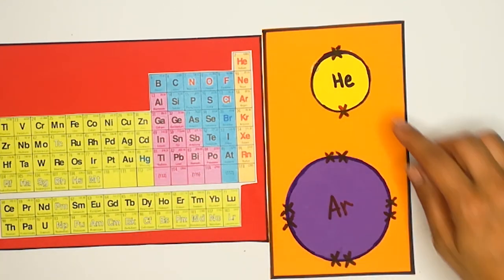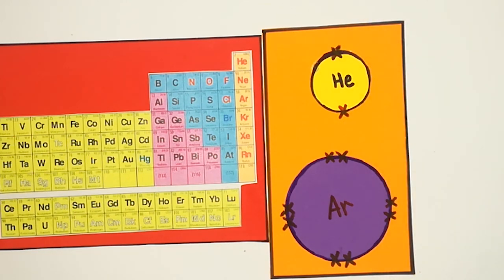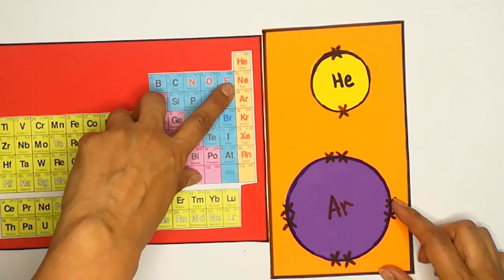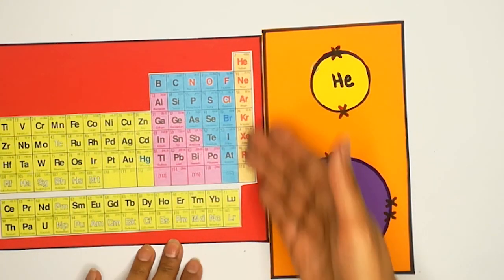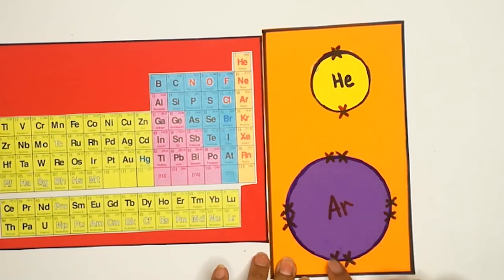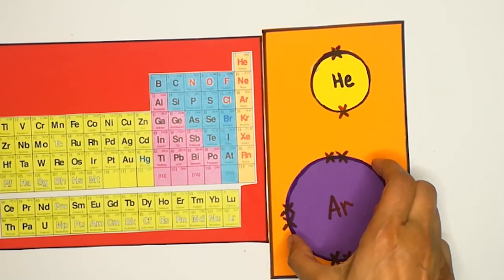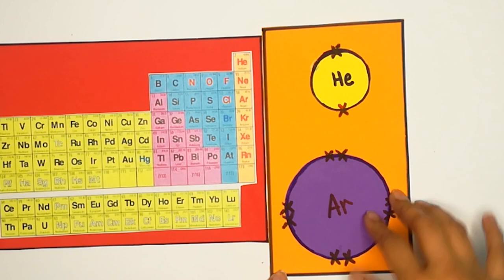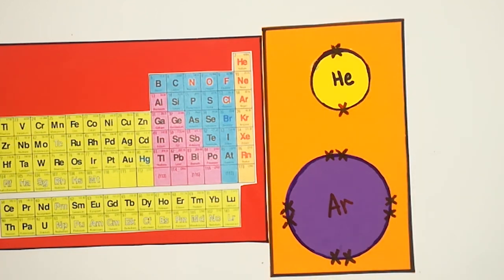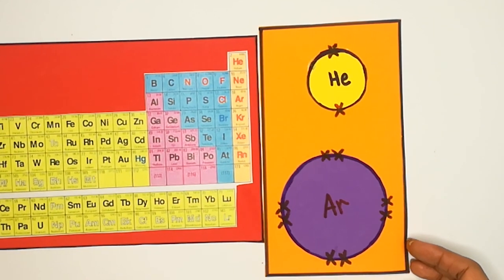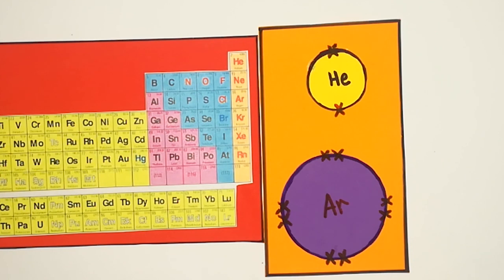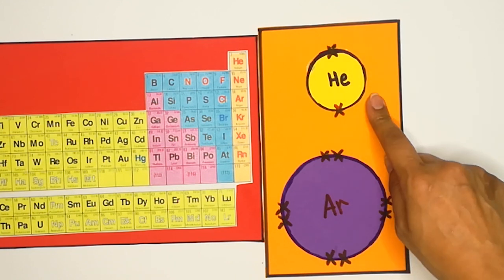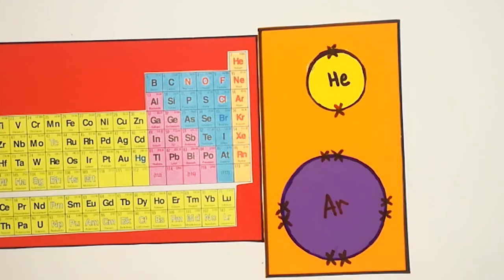Helium has two electrons — its shell is complete. And if we look at neon, argon, krypton, xenon, radon — these elements all have eight electrons in their outermost valence shell. Outermost valence electrons: helium has 2, the rest have 8. Yeh electron na lete hain, na dete hain, na kisi aur element ke saath react karte hain, because they are stable — their electronic configuration is stable.